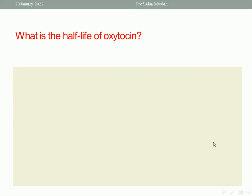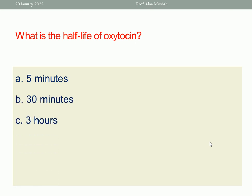Next question: what is the half-life of oxytocin? The distractors are five minutes, 30 minutes, three hours, and two days. The one best response is five minutes — it ranges really between one to six minutes, so it is around five minutes.